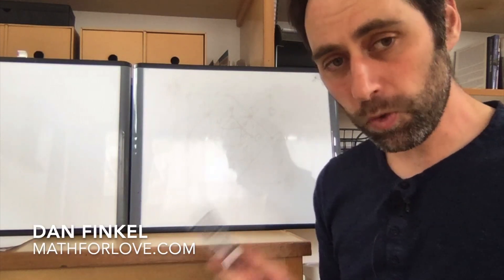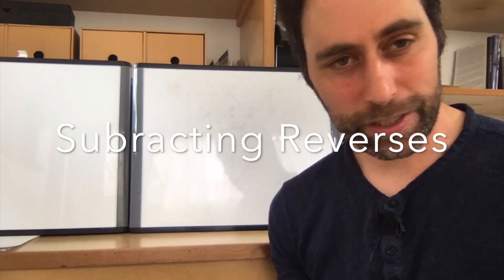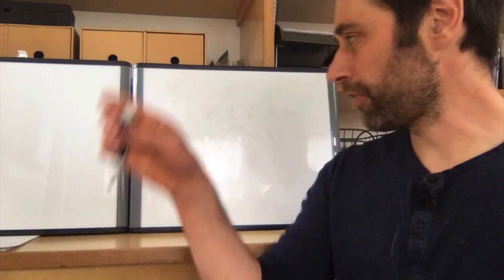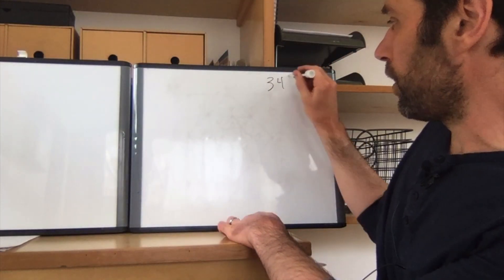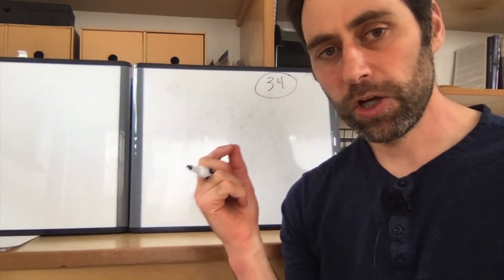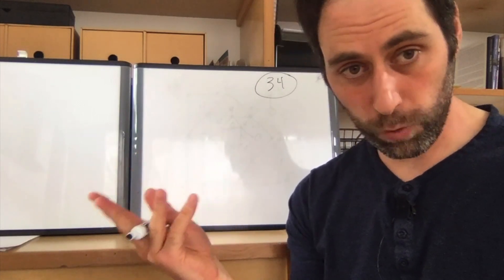Dan from Math4Love here with another subtraction puzzle. This one is my subtracting reverses puzzle. Here's how it works. We pick any two-digit number. I'm going to start with 34. So I'll start with 34 and what I'm going to do is I'm going to find the positive difference between 34 and its reverse, which is 43.